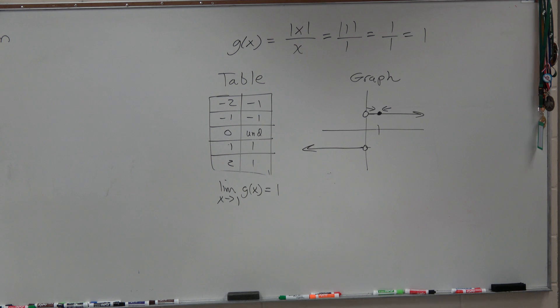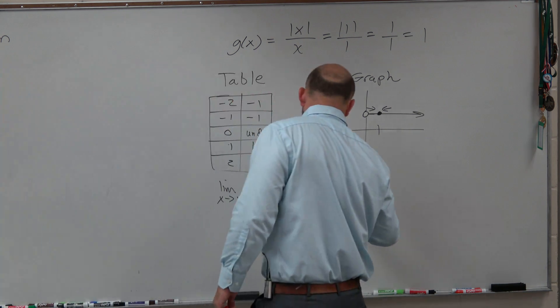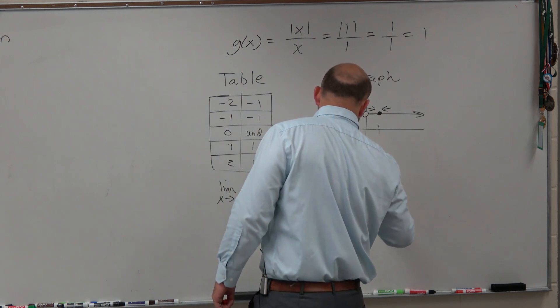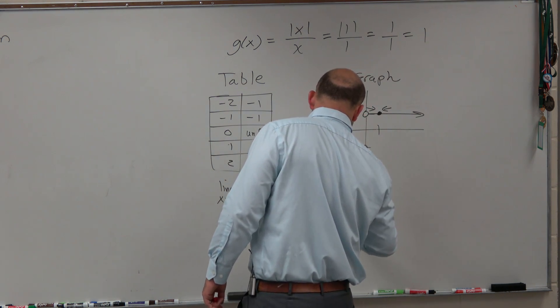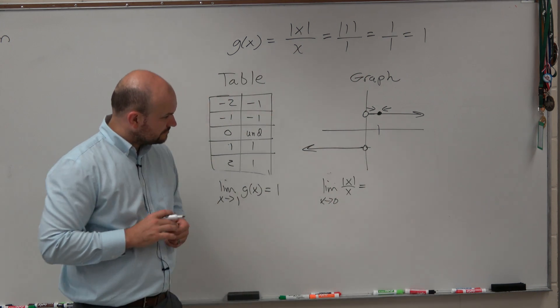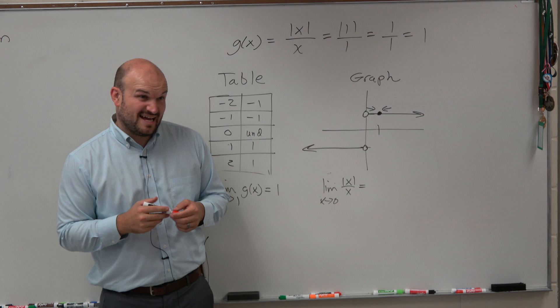If we want to evaluate the limit, I'll show this as the limit of absolute value of x over x as x approaches 0. What is that going to equal? So now we've got to look at something at 0.